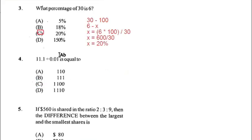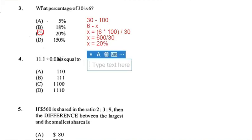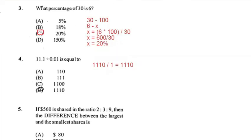Number four: 11.1 divided by 0.01. With division of decimal numbers, change the divisor to a whole number — move the decimal point two places, so it becomes 1. Move the decimal point in the dividend two places as well, so it becomes 1110 divided by 1, which equals 1110. The answer for number four is D.